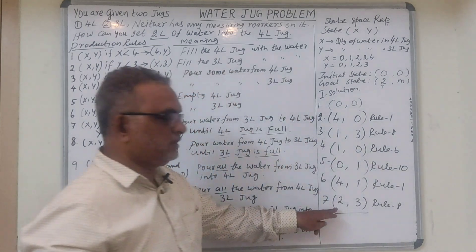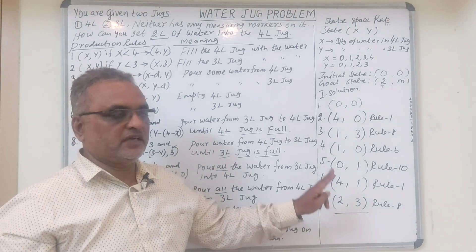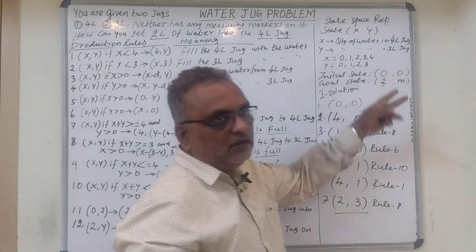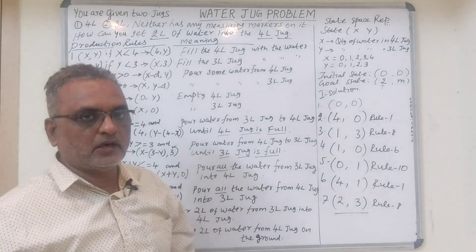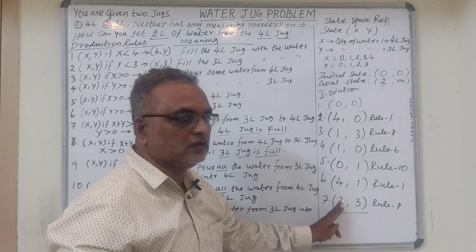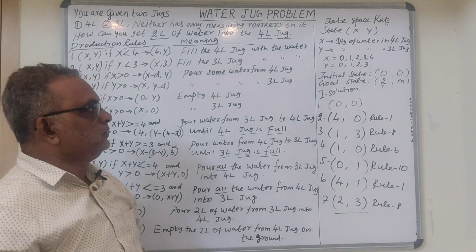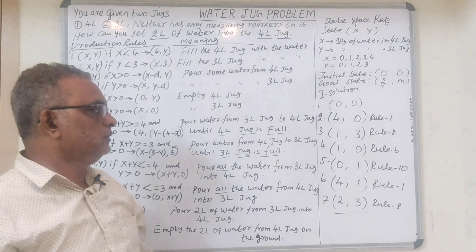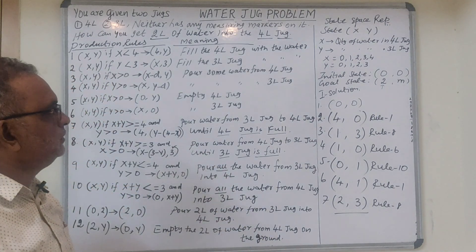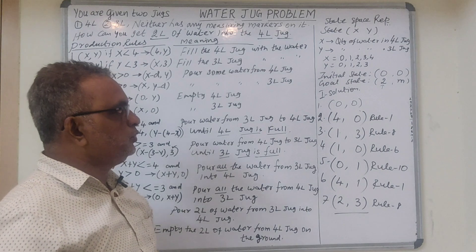This is the goal state — we have 2 litres of water in the 4-litre jug. The value in the 3-litre jug can be any value; we need not worry about it. Our goal state is simply getting 2 litres of water in the 4-litre jug. I hope you understood the concept and how to solve the water jug problem with the help of production rules. I have given you 2 different solutions. Thank you.